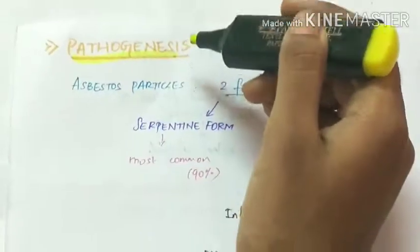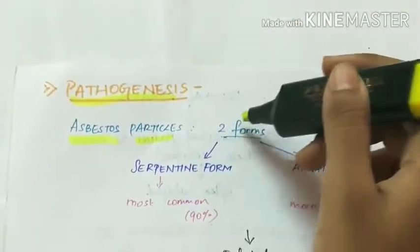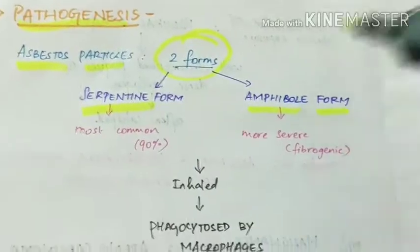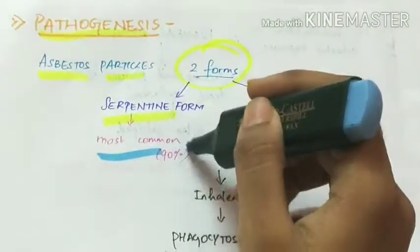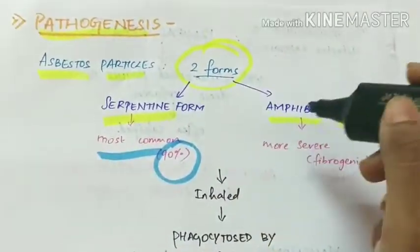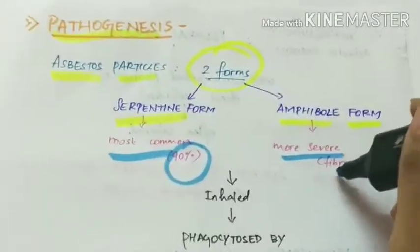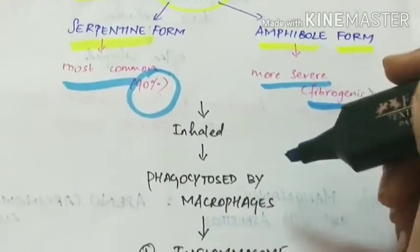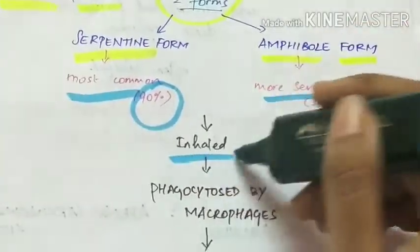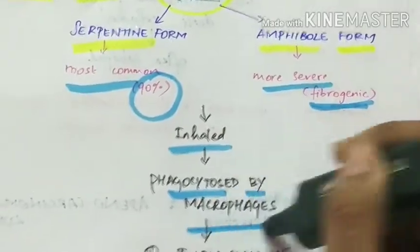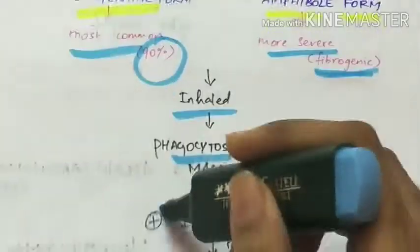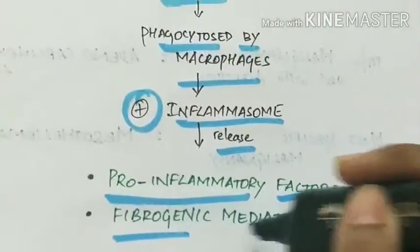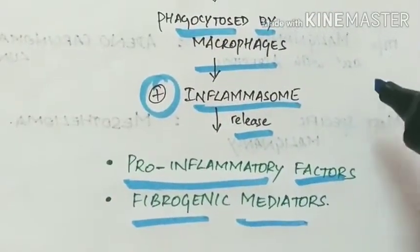Asbestos particles occur in two forms: serpentine form and amphibole form. The serpentine form is the most common, approximately 90%. The amphibole form is more severe and more fibrogenic. The pathogenesis is the same as silicosis: when the asbestos particles are inhaled, they are phagocytosed by macrophages, and the phagocytosed particles stimulate the inflammasome, leading to the release of pro-inflammatory factors and fibrogenic mediators.